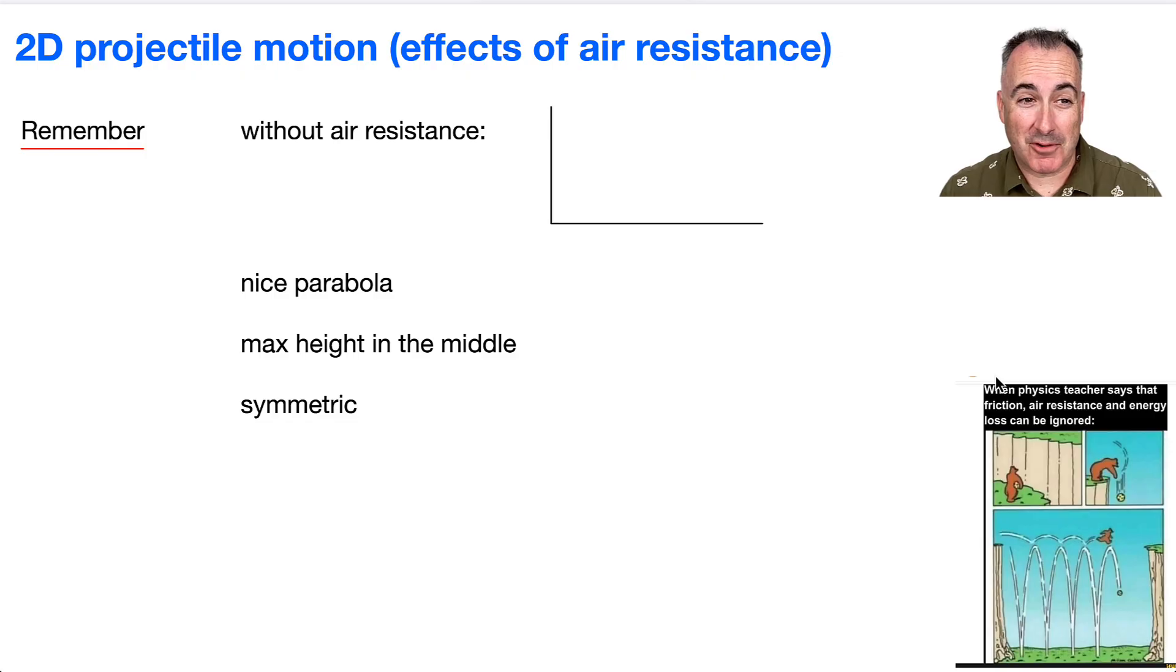So let's remember, first of all, before we do effects of air resistance, let's remind ourselves what happens without air resistance. Without air resistance, it just goes up and down in a nice parabola. Its maximum height is right in the middle. It's symmetric.